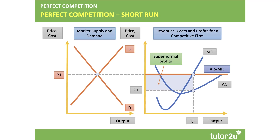Perfect competition first. The key thing here is to draw a double diagram showing the market on the left hand side, which is the sum of individual demands and supplies for a homogenous product. The market sets the price. The firm individually is a price taker, and in the right hand diagram we can see the firm is making some supernormal or abnormal profits at the profit maximizing output.